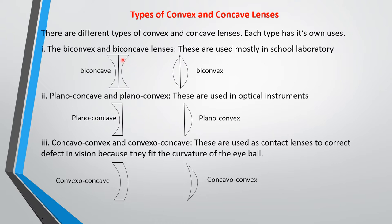Then you have lenses that look like half of the biconvex and biconcave lenses — these are called plano-concave and plano-convex lenses, used mostly in optical instruments like cameras. Then you have the concavo-convex and the convexo-concave lenses, which are used as contact lenses to correct eye defects, because they fit the curvature of the eyeball. So these are the other types of lenses we have.